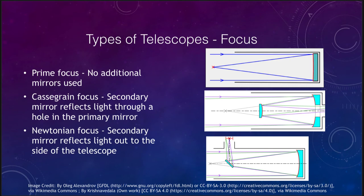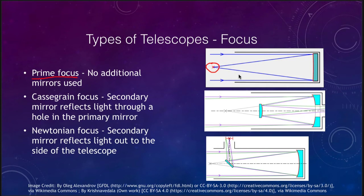We'll look primarily at reflecting telescopes. In a reflecting telescope, there are a couple different focal arrangements often used. There is the prime focus, where no additional optics are needed — light comes in, strikes the mirror, and comes up to the focal point, where you can place a detector. You might think that's relatively inefficient for a small telescope since putting your head there blocks some light. However, for very large telescopes — 10 or 12 meters across — blocking a little bit of light really isn't a big deal.